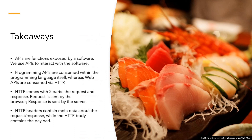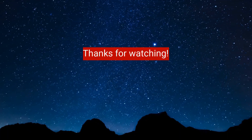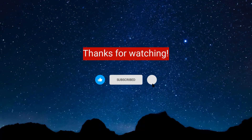Key takeaways for this lesson: APIs are just functions exposed by software that we can use to interact with it. Programming APIs are consumed within the programming language itself — we call the functions directly in our code. In contrast, web APIs are consumed via HTTP, where we don't have access to the source code. HTTP has two parts — the request and the response — each with a header and a body. The header contains metadata; the body contains the payload.